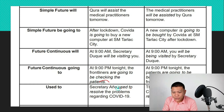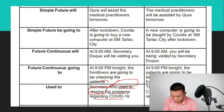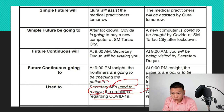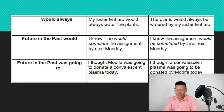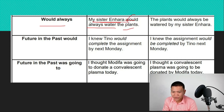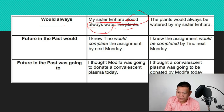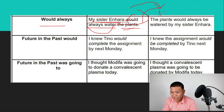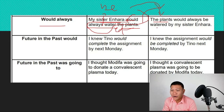When we use the verb phrase 'used to': 'Secretary Año used to resolve the problems regarding COVID-19.' When converting, 'the problems regarding COVID-19' becomes the subject. We keep 'used to' and add 'be' plus the past participle: 'The problems regarding COVID-19 used to be resolved by Secretary Año.' For 'would always': 'My sister and Hara would always water the plants.' When converting, 'the plants' becomes the subject. We insert 'be' and add -ed for past participle: 'The plants would always be watered by my sister and Hara.'